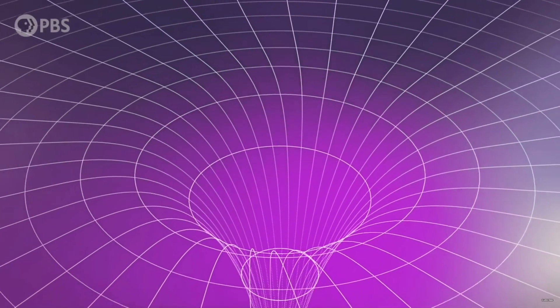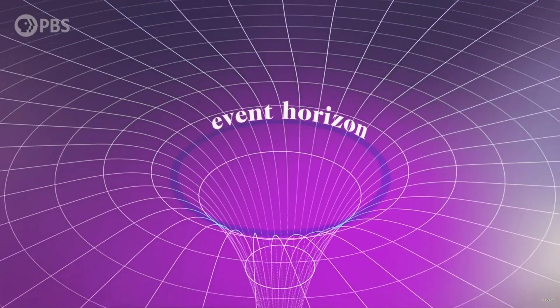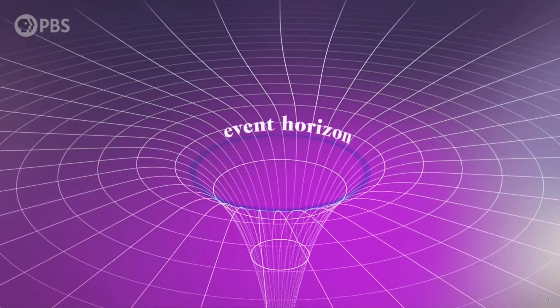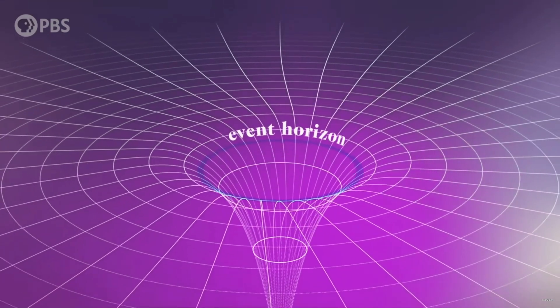But what exactly is an event horizon? The event horizon is the region of space surrounding a singularity from which no light can escape, giving black holes their blackness.